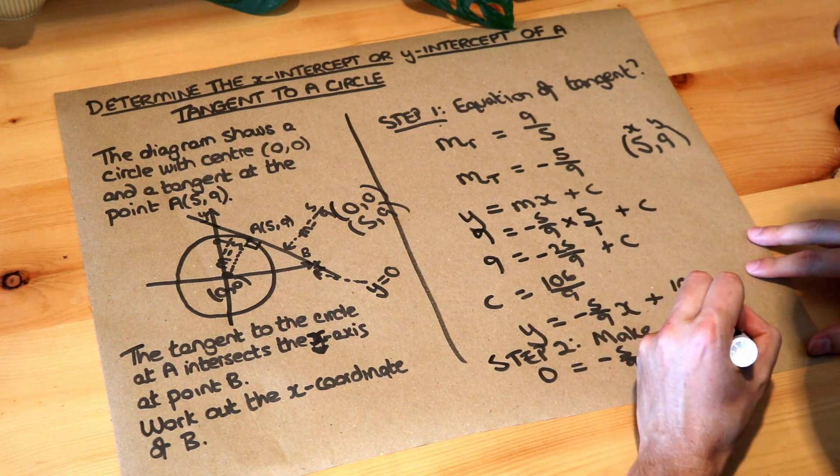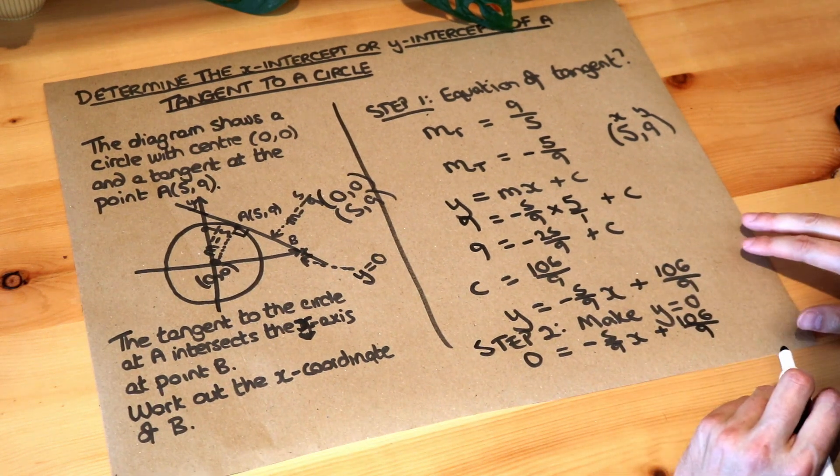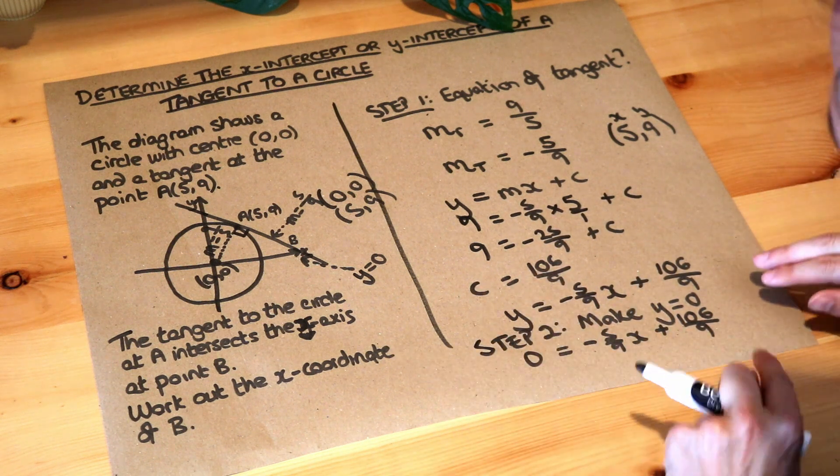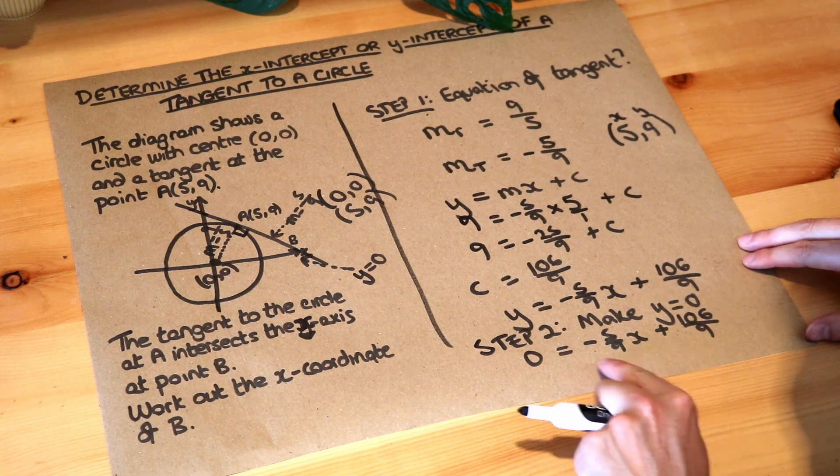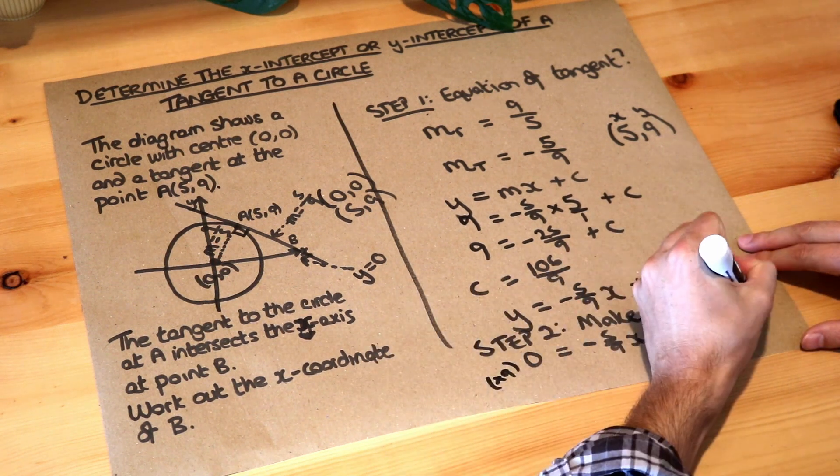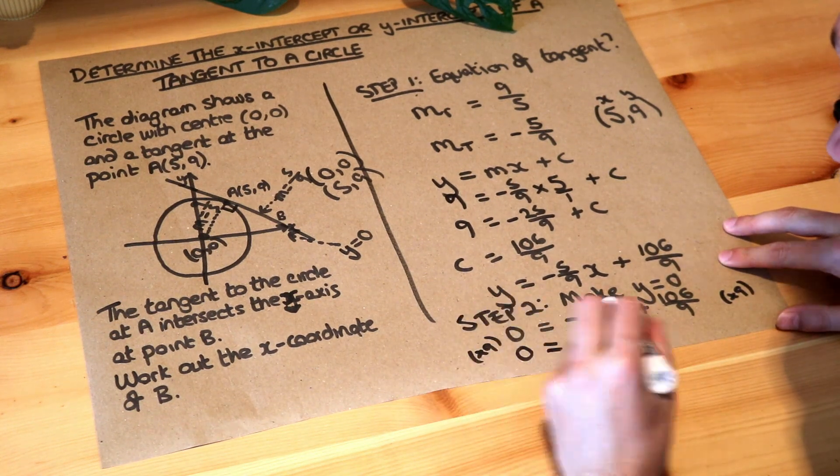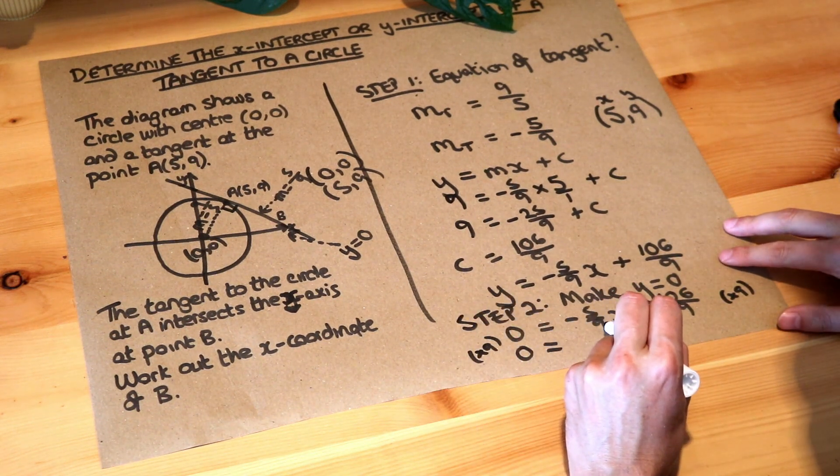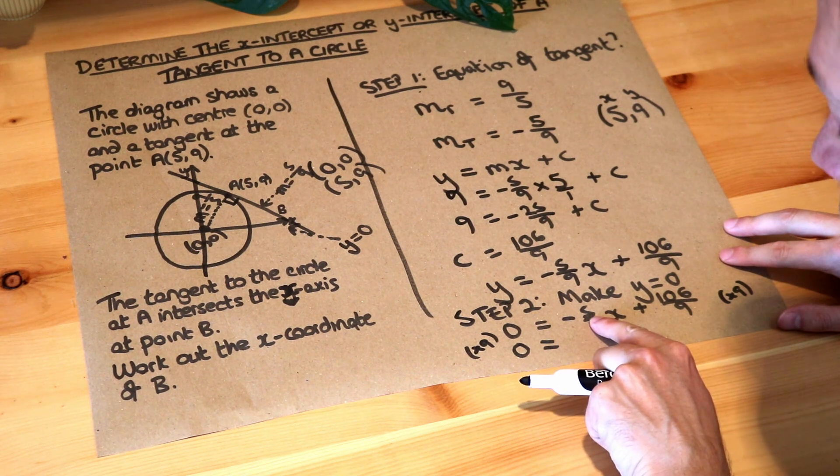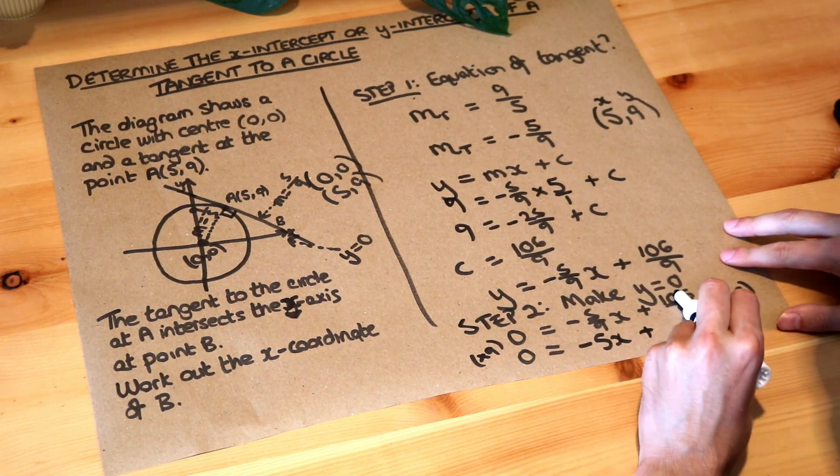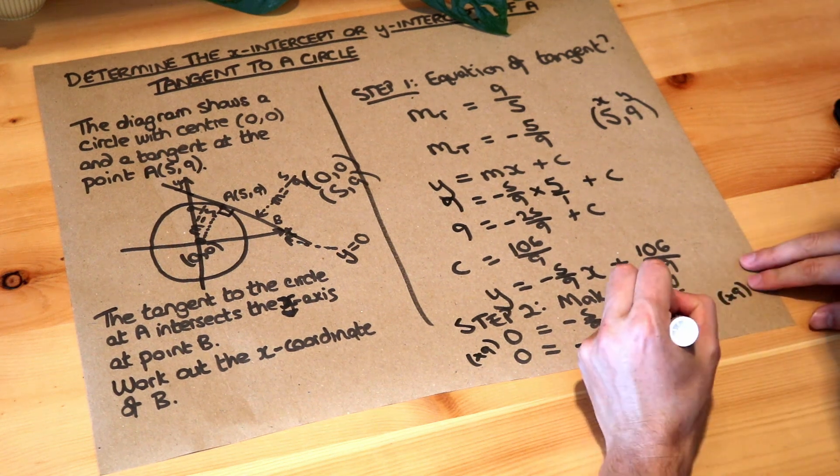So 106 over 9. I'm going to make my life a bit easier by multiplying everything by 9, so we get rid of fractions. We don't like fractions in equations, so I'm going to multiply both sides of the equation by 9. So 0 times 9 is still 0. 5/9 times 9 just becomes 5. It gets rid of the over 9, so it's minus 5x plus, and that times 9 just gets rid of the over 9, 106.